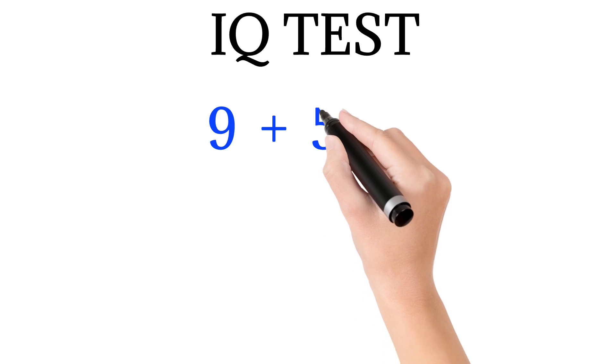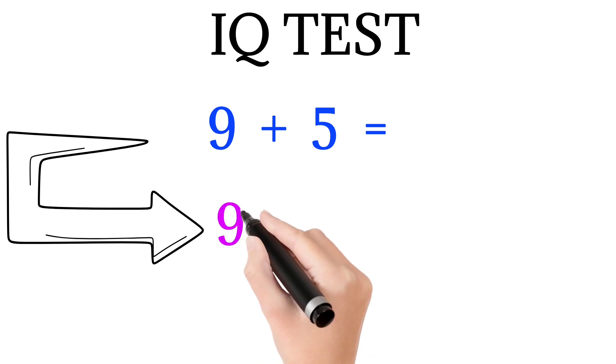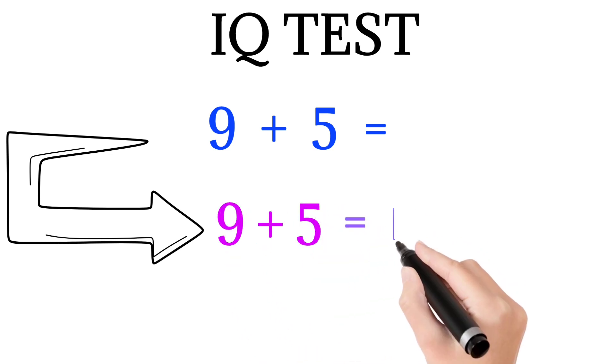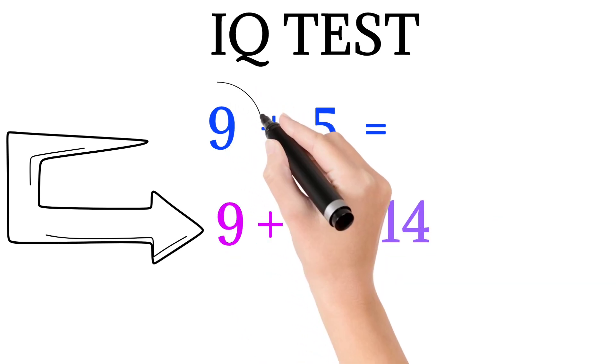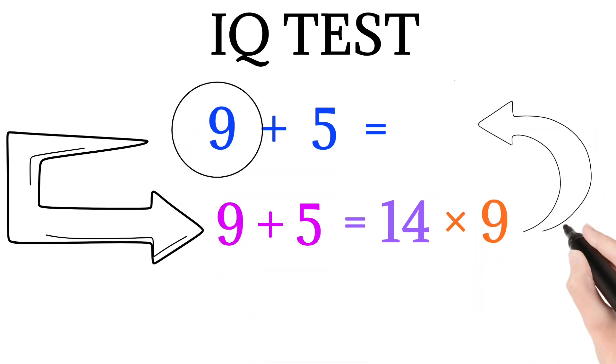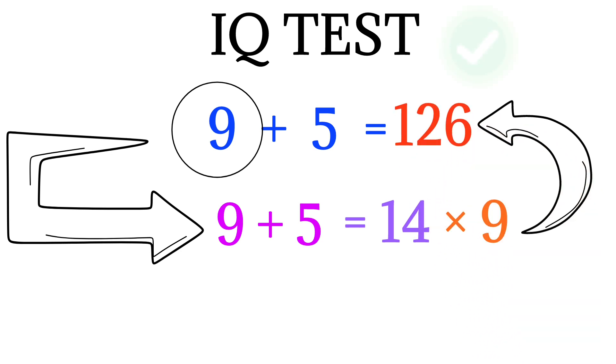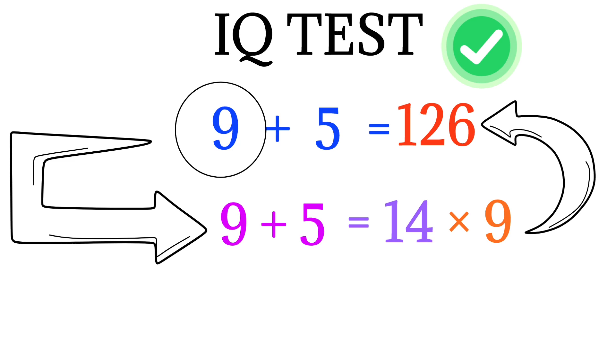To find the value of 9 plus 5, we have to follow the same pattern. So, add both the numbers, that is 9 plus 5, we get 14. And now multiply it with the first number, that is 9, we get 126. Therefore, 126 is the correct answer to the question.